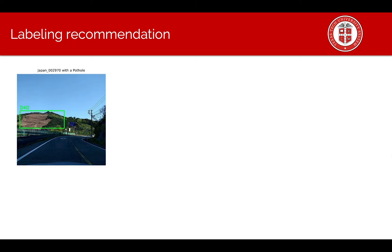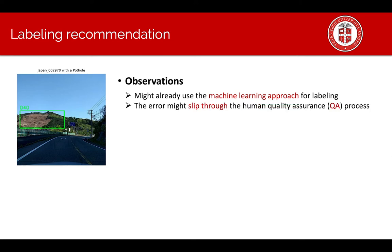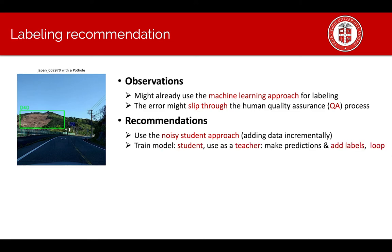We further explored the data and found this kind of errors. The dataset might have been labeled by machine learning approach as well, and this kind of error slipped through the human quality assurance check. Our recommendation is to use the noisy student approach to add the training data incrementally. Specifically, we train a model called a student and use it as a teacher to make predictions and add labels for unlabeled data. Then we loop back and train another bigger model and add more data and so on and so forth.